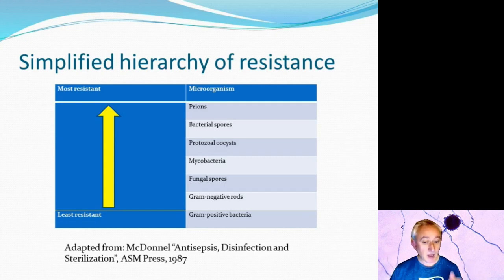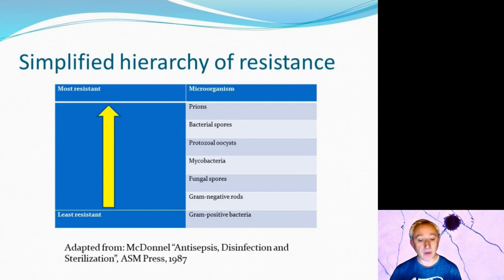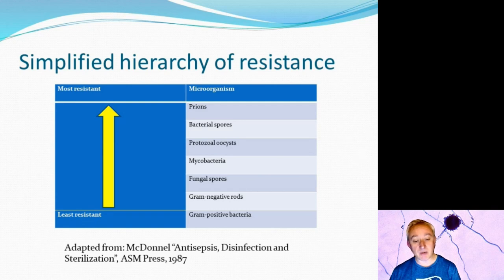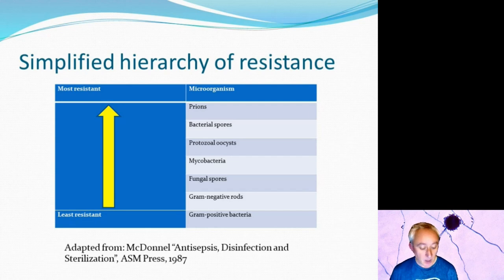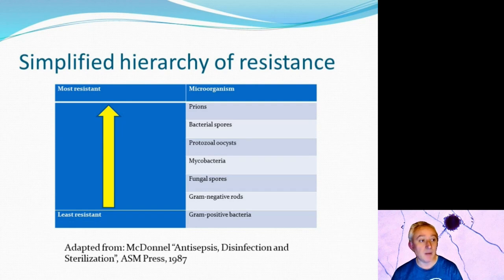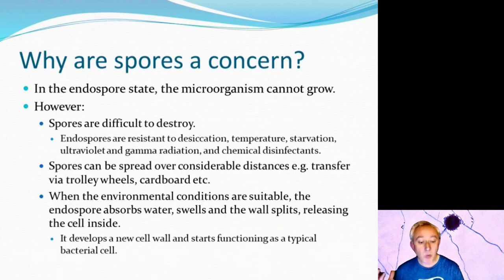Mycobacteria and bacterial spores — if we disregard prions, which are not really a form of life — are at the top and are very resistant to disinfectants because the spore coat and the cortex act as a barrier. Bacterial spores are generally more resistant than fungi, but there are some variables to take into account. So why are spores a concern?